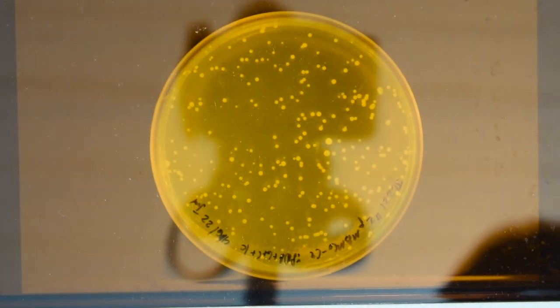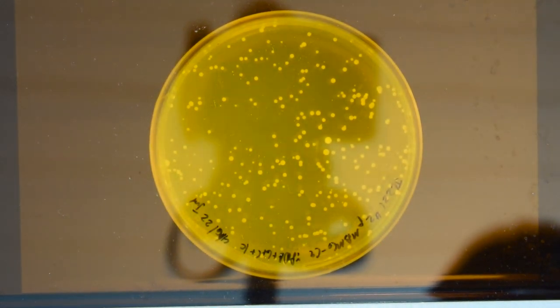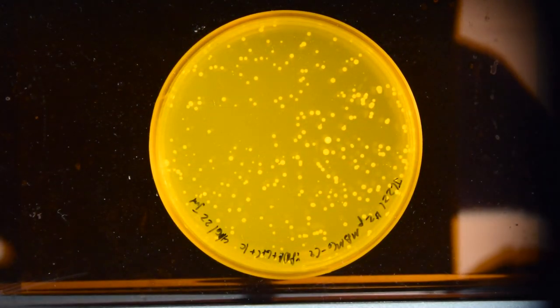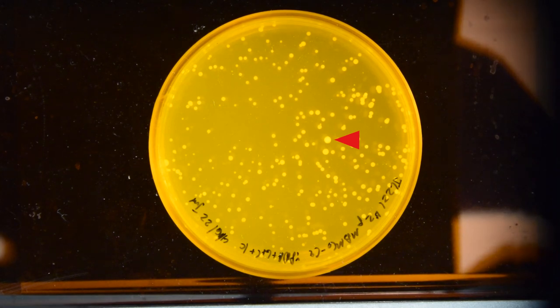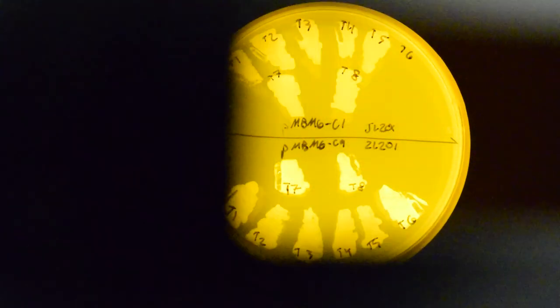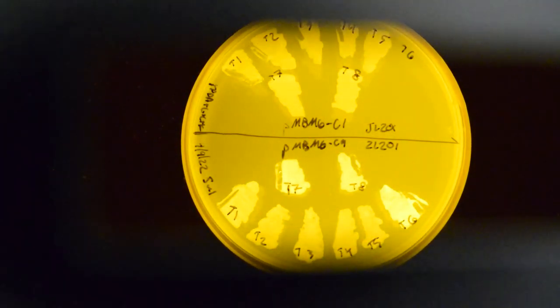The construct I am using shows best after plates are moved to 4 C for 1-2 days. I am using LSSmOrange, a fluorescent protein visible on a blue light transilluminator with an orange filter. Bright colonies in this case are likely positive transformants, which can then be confirmed with a PCR screen.